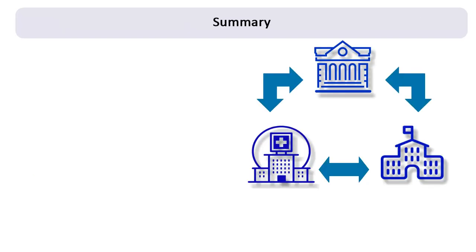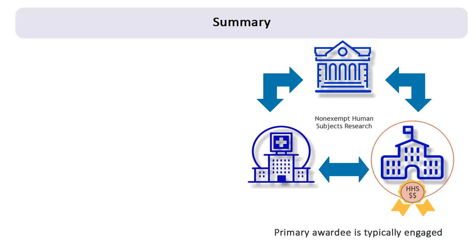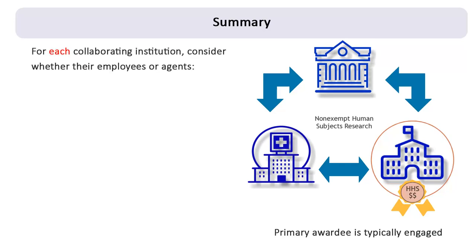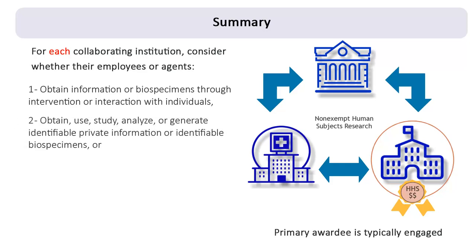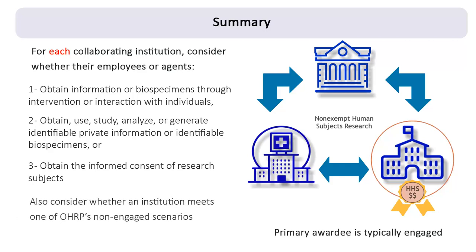To summarize, when several institutions are collaborating on non-exempt human subjects research covered by the HHS regulations, the primary awardee of the federal funds is typically engaged. For the other collaborating institutions, consider whether their employees or agents: 1) obtain information or biospecimens through intervention or interaction with individuals and use, study, or analyze the information or biospecimens; 2) obtain, use, study, analyze, or generate identifiable private information or identifiable biospecimens; or 3) obtain the informed consent of research subjects. Finally, consider whether the engagement of any of the collaborating institutions meets one of the non-engaged scenarios included in OHRP's guidance on engagement of institutions in human subjects research.